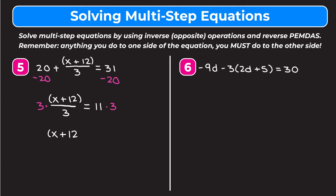On the right 11 times 3 is 33. Finally we get rid of the 12 being added by subtracting 12 from both sides. On the left we're left with x. On the right 33 minus 12 gives us 21. So x equals 21.